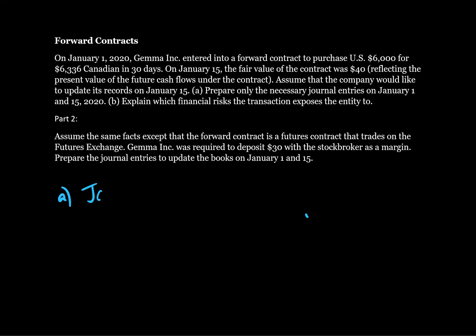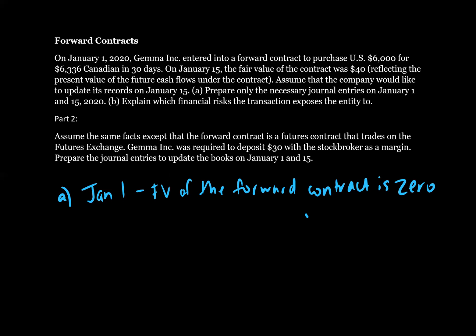Let's take a look. For January 1, what journal entry would we record when we first enter into this contract? We're told that on January 15 the fair value is $40, but what would the fair value be on January 1? The fair value of the forward contract is $0 on inception. So no journal entry is required. Whenever a company enters into a forward contract on the date they enter into it, the fair value is $0 because it's a market transaction.